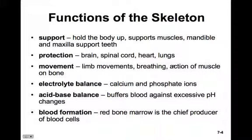Bones are also involved in electrolyte balance — they're a big storage site for calcium and phosphate ions. They're involved in acid-base buffering because they can buffer the blood against excessive pH changes. Finally, bones are involved in blood formation; the red bone marrow is the chief producer of all the different types of blood cells.